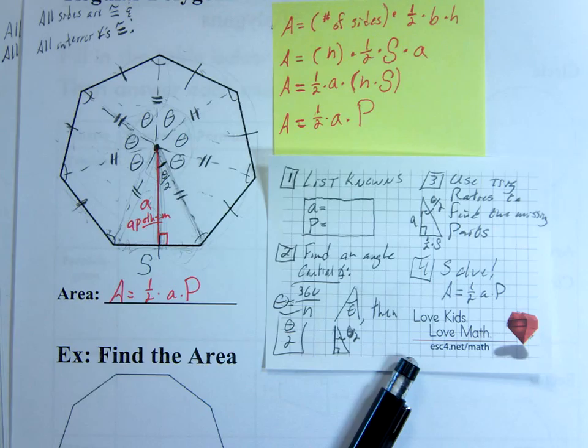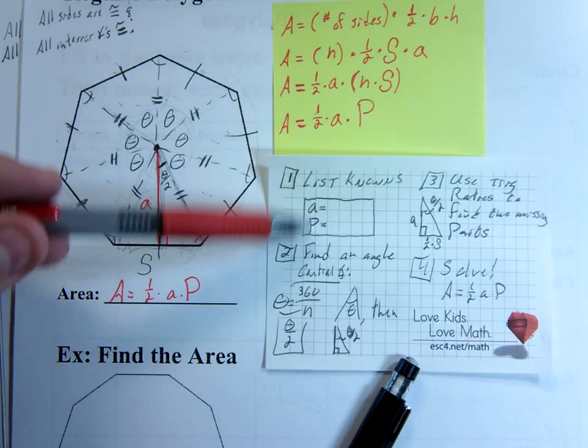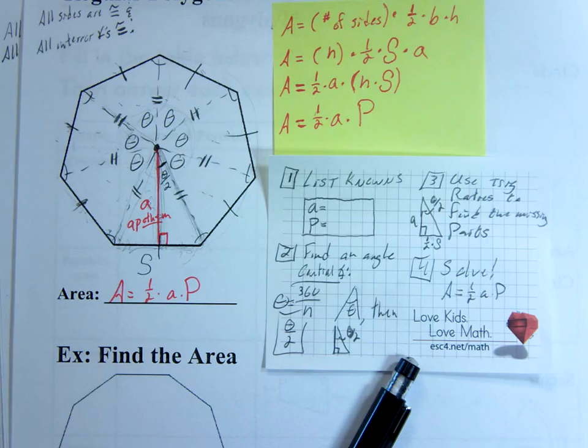First one says, list your known. List your known information. So I'm always going to start off by putting this A and P and putting a box around it. This is where I'm going to put all my information as I gather it. Sometimes I get something right away, and I put it in immediately. Sometimes I have to do some math, do some calculations to find one of these pieces, and then I write it in.